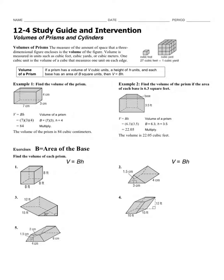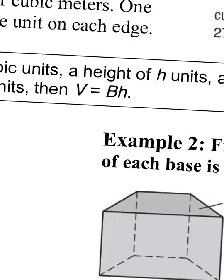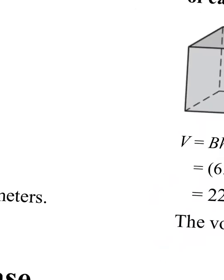Today we will be doing 12-4, Volume of Prisms and Cylinders, from the McGraw-Hill geometry textbook. The equation for volume of a prism is: volume equals the area of the base times the height of the prism. We're going to be focusing on this equation. The base can be triangles, squares, trapezoids, etc.